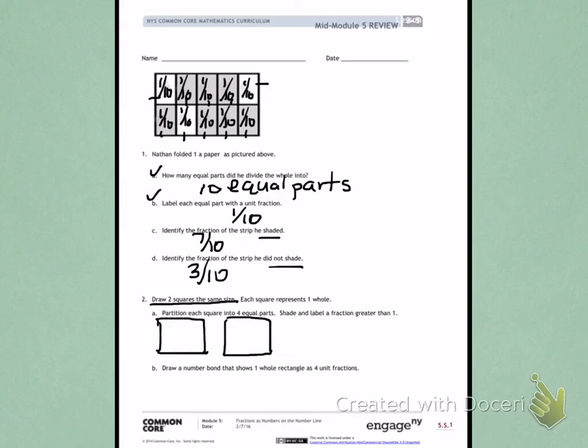Letter A. Partition each square into four equal parts. Shade and label a fraction greater than 1. So I need to make four equal parts, and then shade and label a fraction greater than 1. So I'm going to partition my squares into four equal parts.